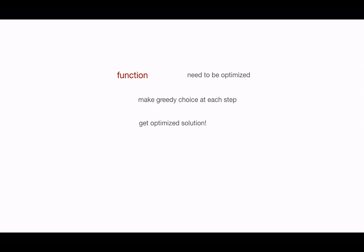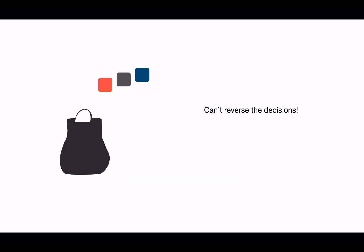The greedy algorithm has only one shot to compute the optimal solution — it never goes back and reverses a decision. If we pause and think, sometimes being greedy at each step may lose the overall optimality.